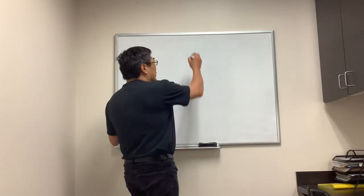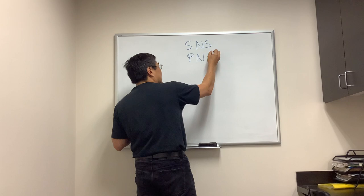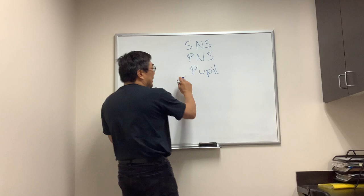We're going to be talking about the sympathetic nervous system and the parasympathetic nervous system for the pupil in the context of systemic disease. The pupil size is controlled by the two pieces of the autonomic nervous system.